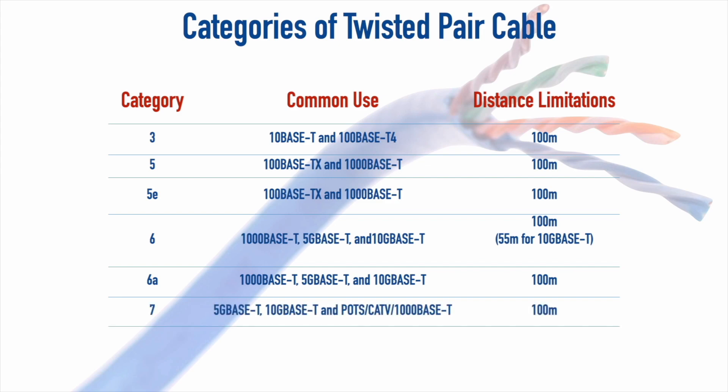Category 7 can support 5GBaseT and 10GBaseT, and you might also use it to carry POTS — plain old telephone service — CATV (cable TV), and your phone system alongside gigabit Ethernet. So you can have voice, video, and data all running side by side on Category 7 cable with a distance limitation of 100 meters.